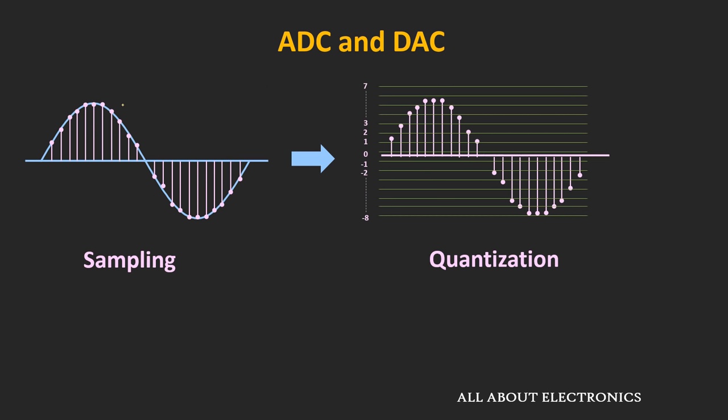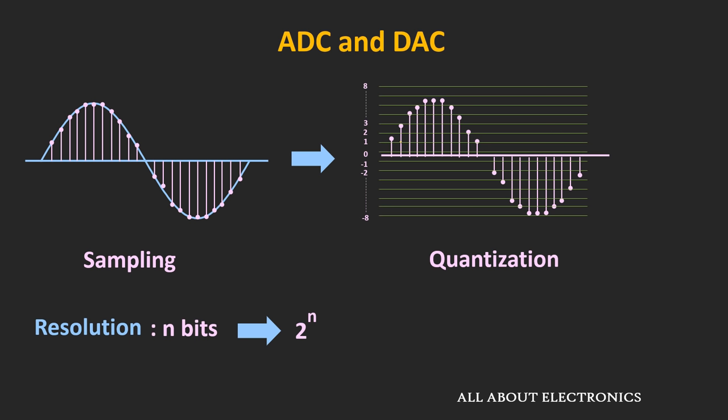As you can see, a signal is quantized into 16 different levels, and a sampled signal is assigned the nearest value from these 16 levels. The resolution of the ADC decides how close the quantized value is to the actual value. This resolution is defined in the number of bits, which refers to the number of bits in which the quantized signal will get encoded. For a given ADC with resolution of n bits, the total number of discrete levels is equal to 2 to the power n.